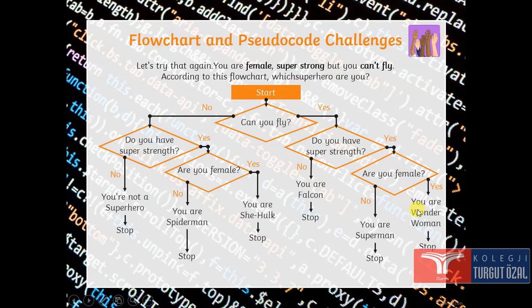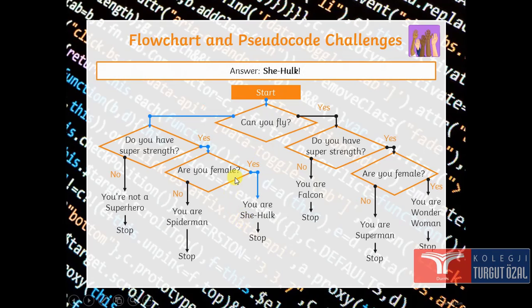Let's try that again. You are a female. You are super strong but you cannot fly. According to this flowchart, which superhero are you? Can you fly? No. You cannot fly. Do you have super strength? Yes. Are you a female? Yes. Then you are She-Hulk. The answer is She-Hulk. This is the steps that you will follow.